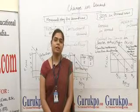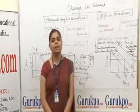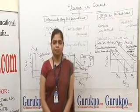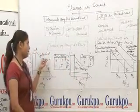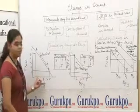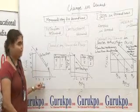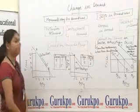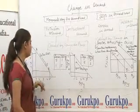We can also understand this concept with the help of a diagram. In the extension of demand diagram, on the X-axis we take the quantity of a commodity and on the Y-axis we take the price. The quantity values are 1, 2, 3, 4, 5 and the price values are 1, 2, 3, 4, 5.